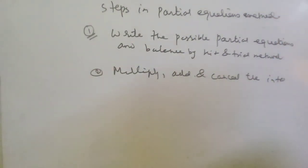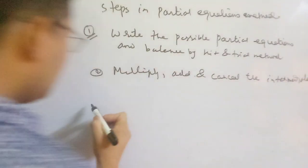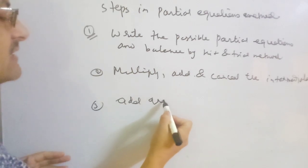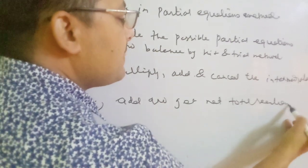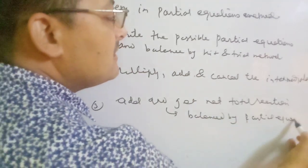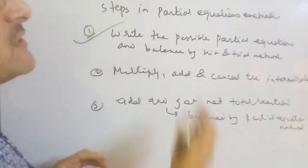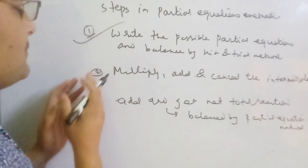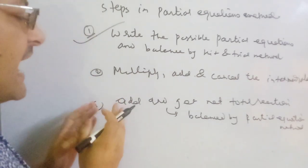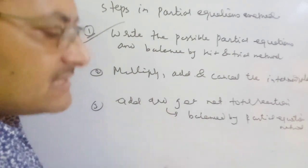In partial equations there are many intermediate products that will be eliminated by multiply, add, and cancel operations. Step three: add all the partial equations and get the net total reaction, which will be automatically balanced by the partial equations method. So: write possible partial equations and balance by hit and trial; multiply, add, and cancel the intermediates; then add and get the net total balanced reaction.